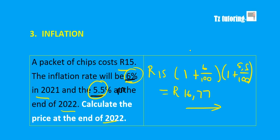To repeat: this is an inflation rate increasing over two years. The price increases by 6% in 2021 and 5.5% in 2022. Each year must have its own bracket, and inside each bracket you always start with one plus the increase. After both years, the final price is R16 and 77 cents.